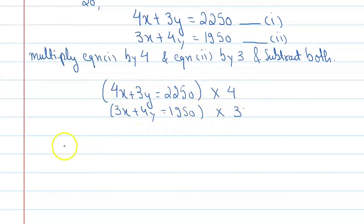Let's see what we get. 4 into 4 is 16x plus 12y equals 9000. Now the second equation becomes 9x plus 12y equals 5850. So see, this is what we have now solved.